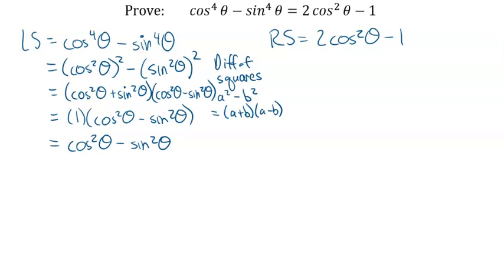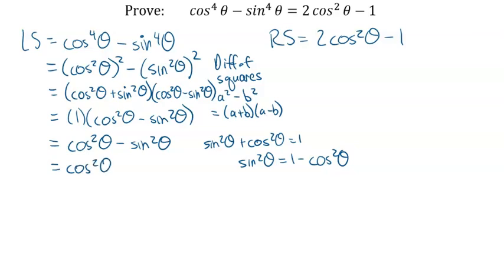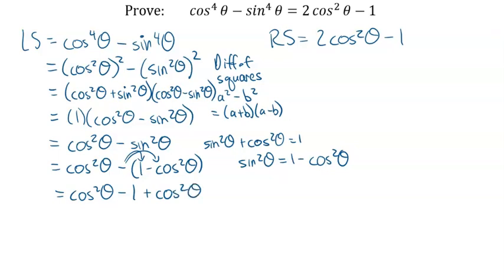Now I need to get rid of the sine squared theta. I'll write sine squared theta in terms of cos squared theta: from the Pythagorean identity, sine squared theta equals one minus cos squared theta. Replacing, I get cos squared theta minus the quantity one minus cos squared theta. Applying the negative, that becomes cos squared theta minus one plus cos squared theta. Combining like terms gives me two cos squared theta minus one. That's equal to the right side — the identity is proven.